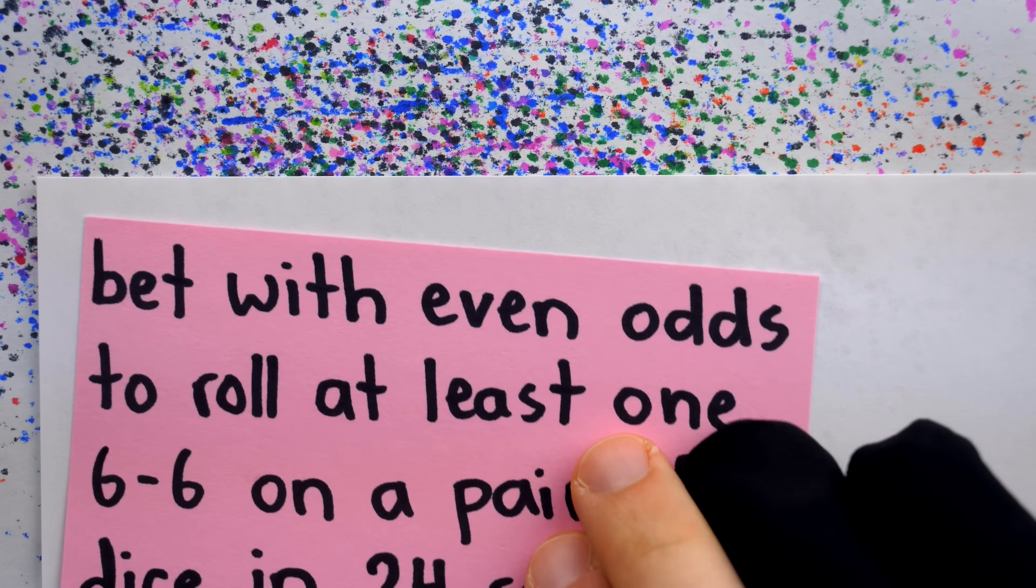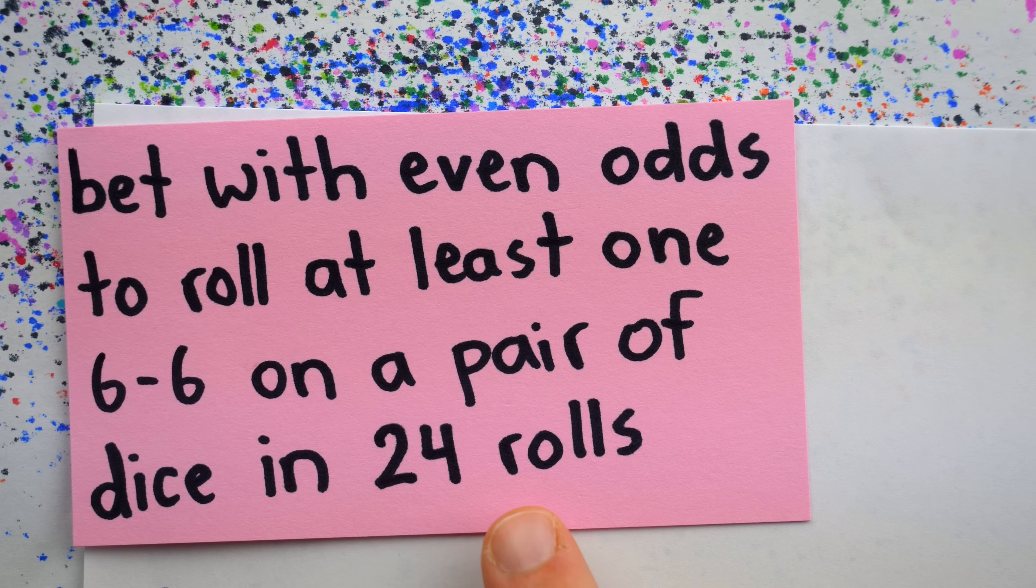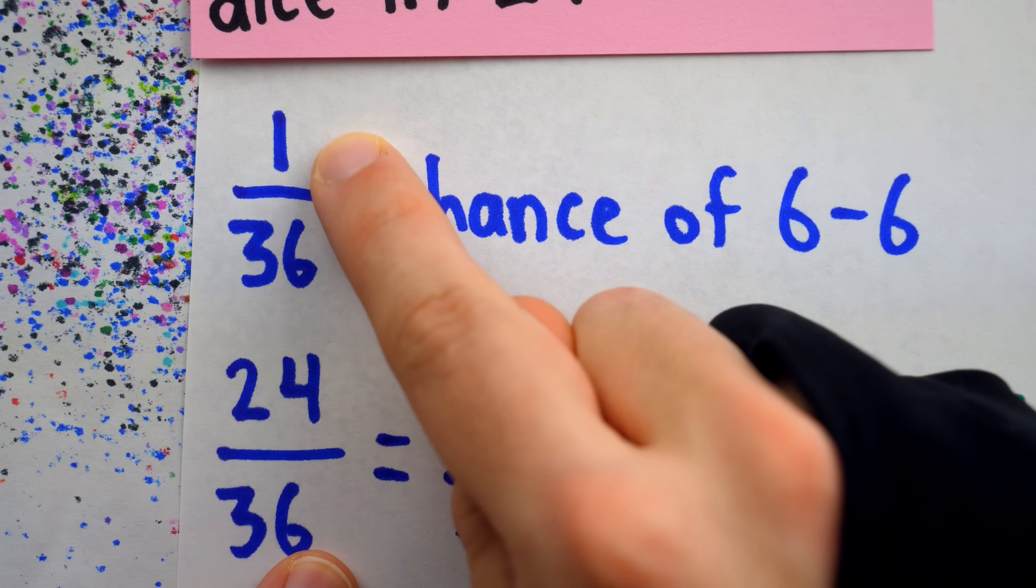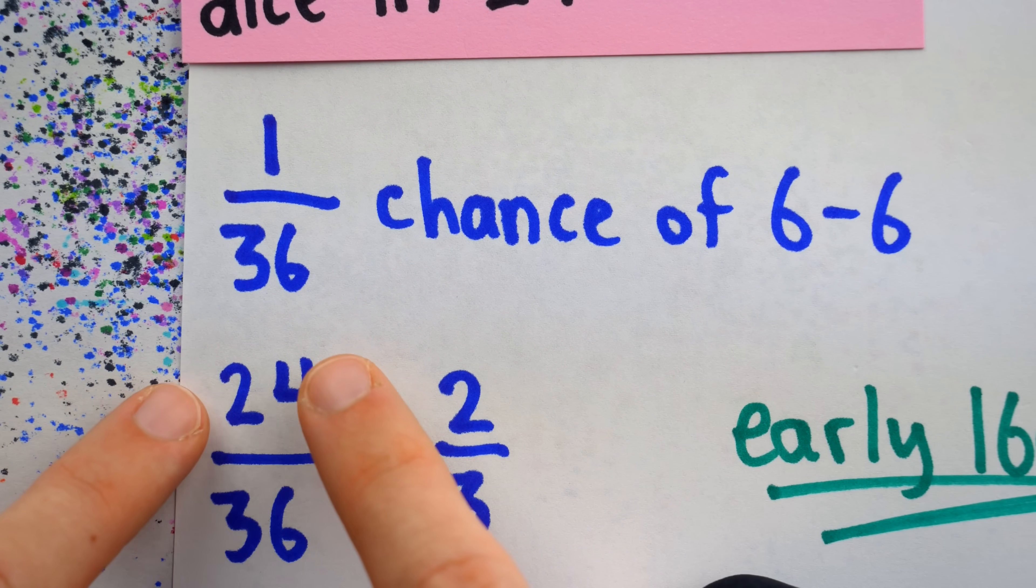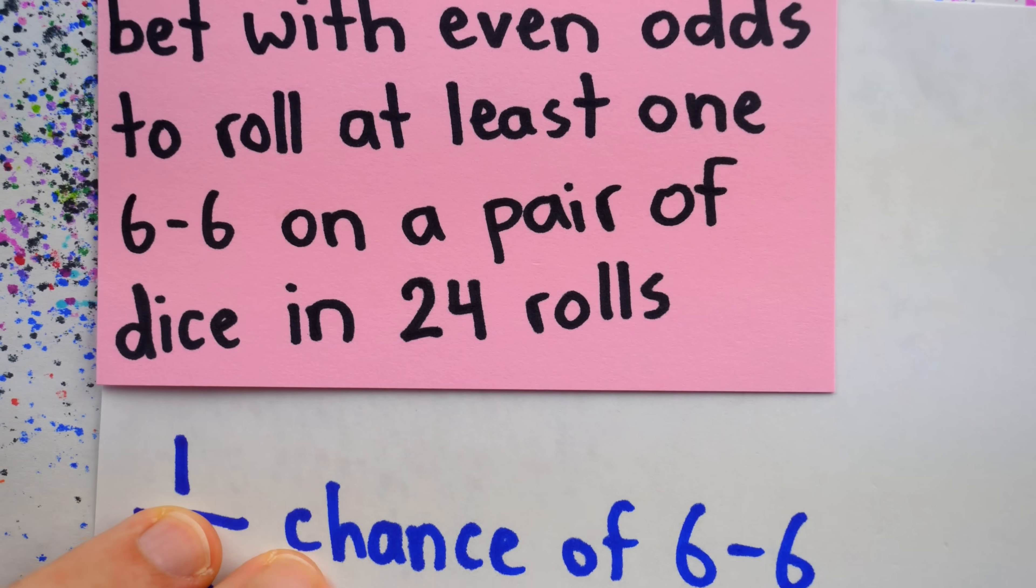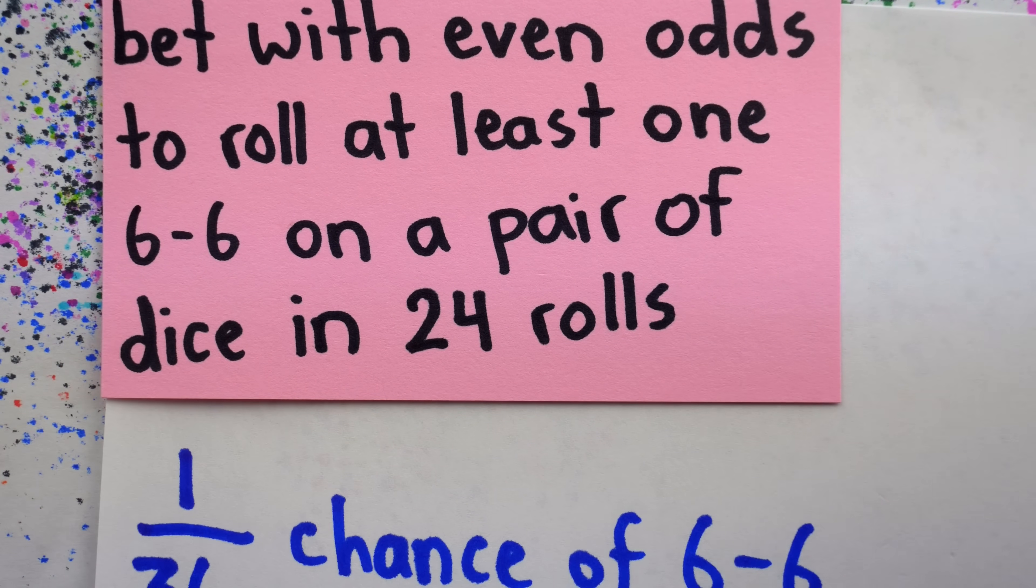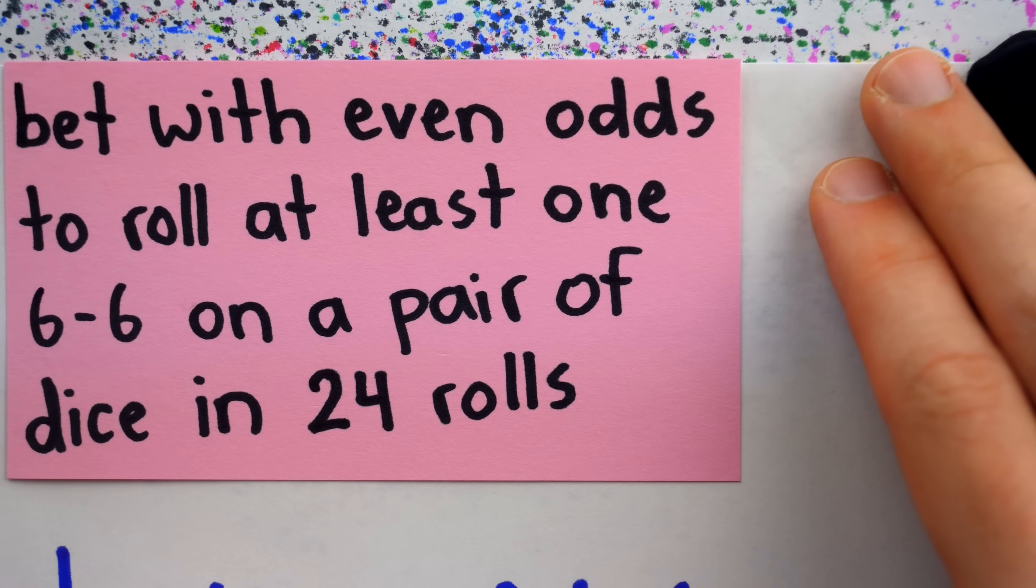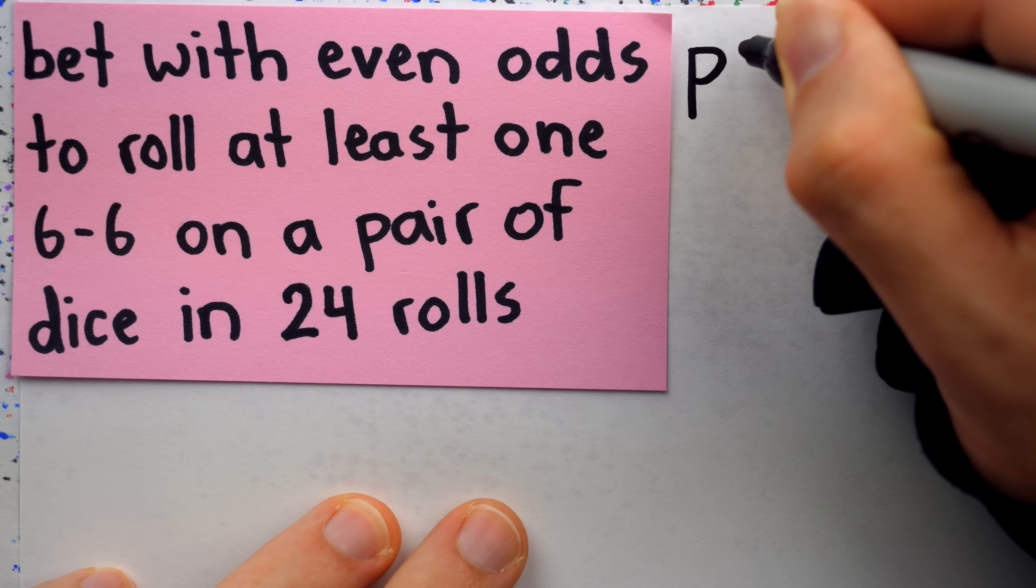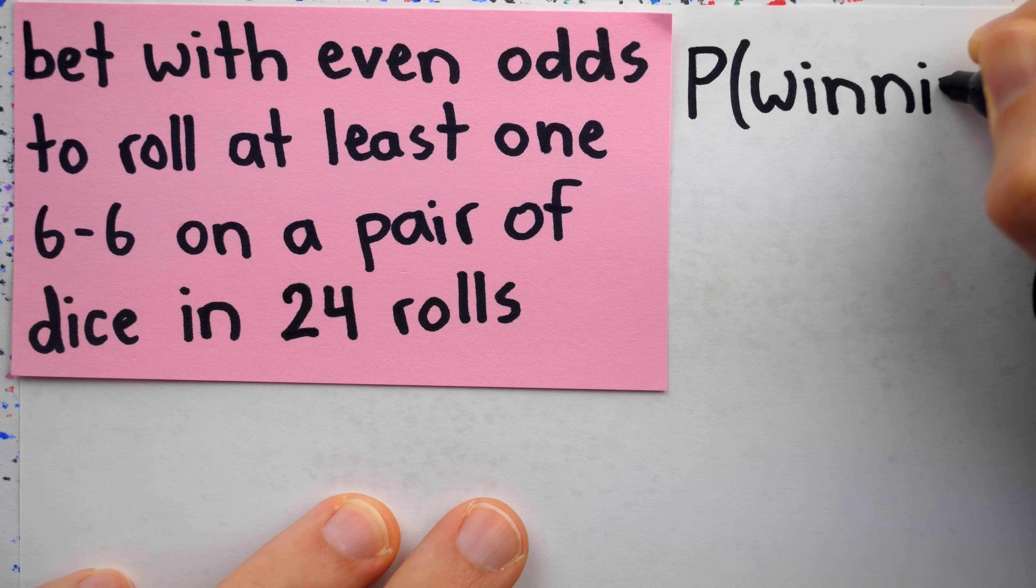Of course, in the second game, Demire makes the exact same error, thinking that just because we're rolling the pair of dice 24 times, we can multiply the 1 over 36 chance of rolling sixes by 24 to get a two thirds chance of rolling at least one pair of sixes in 24 rolls. Again, this would imply that we're guaranteed a pair of sixes in 36 rolls, which of course isn't true. The actual probability of winning this game can be found in very much the same way as the previous game.